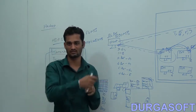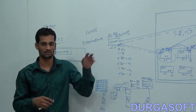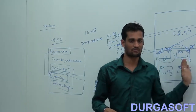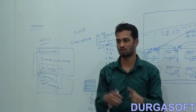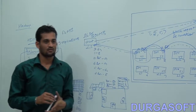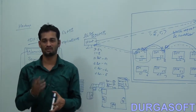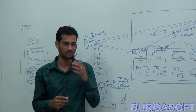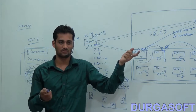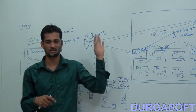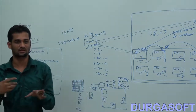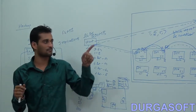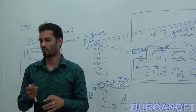This completes the storage part. Now let's discuss processing. Once data is stored, a client writes a program — say 10 KB of Java or Python code — to process that 200 MB of data. It is better to send the small 10 KB program toward the data in the cluster rather than fetching 200 MB of data back to the local machine. This is called moving computation to data.